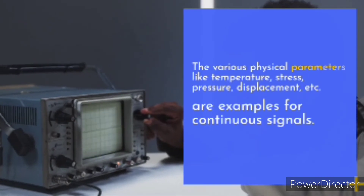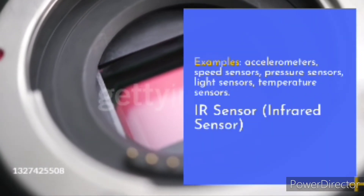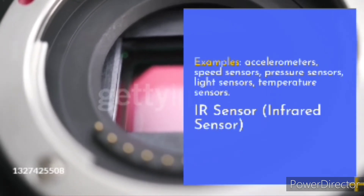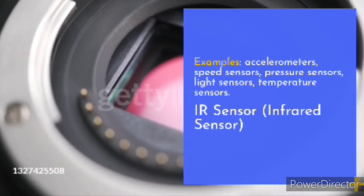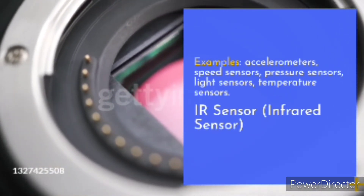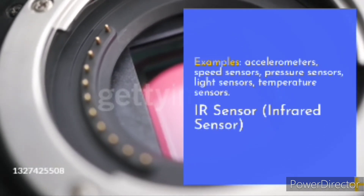The various physical parameters measured by analog sensors include temperature, stress, accelerometers, displacement, speed sensors, pressure sensors, light sensors, temperature sensors, air sensors, and infrared sensors.